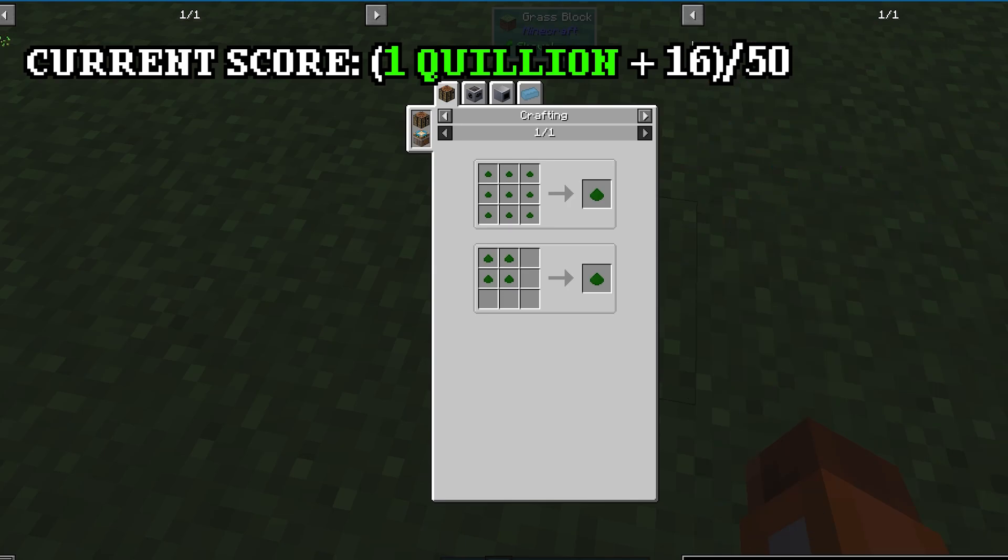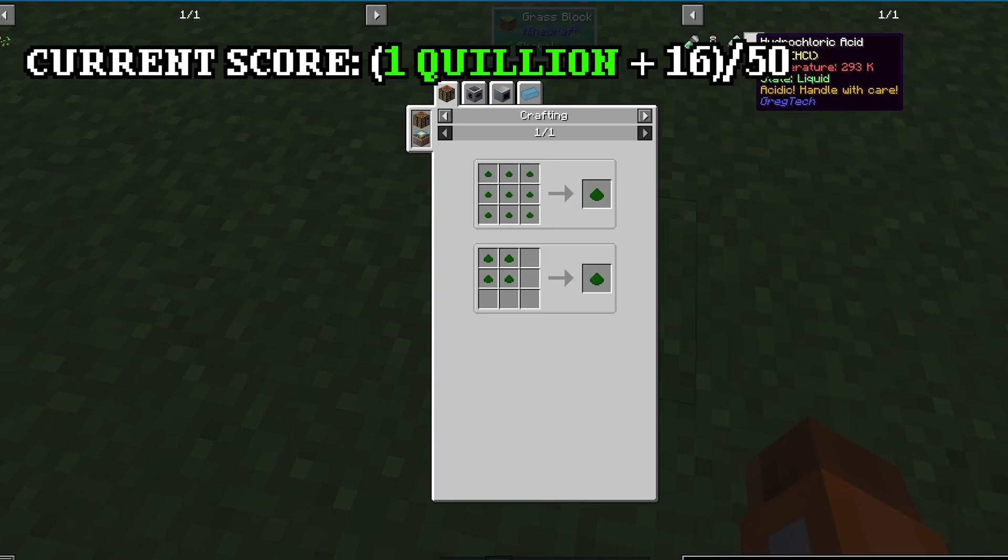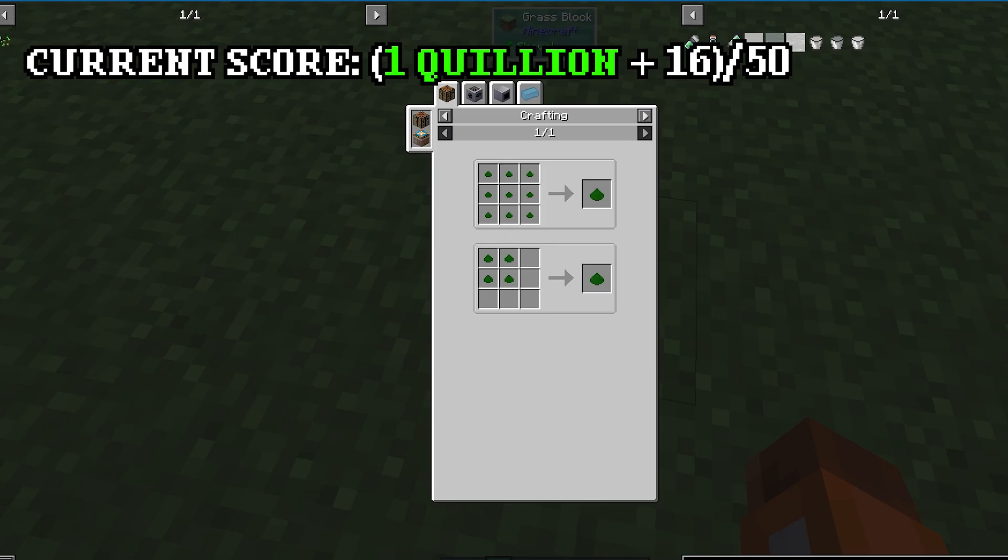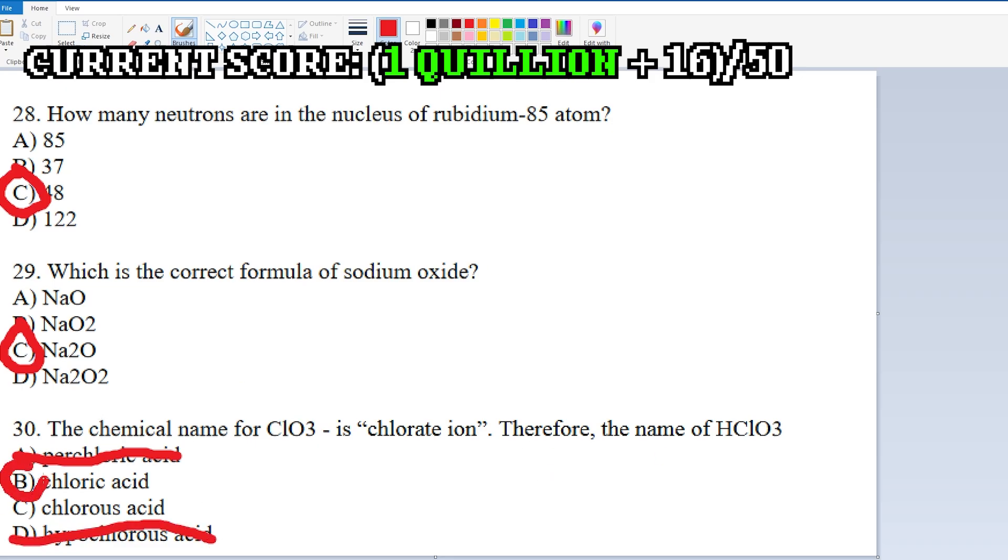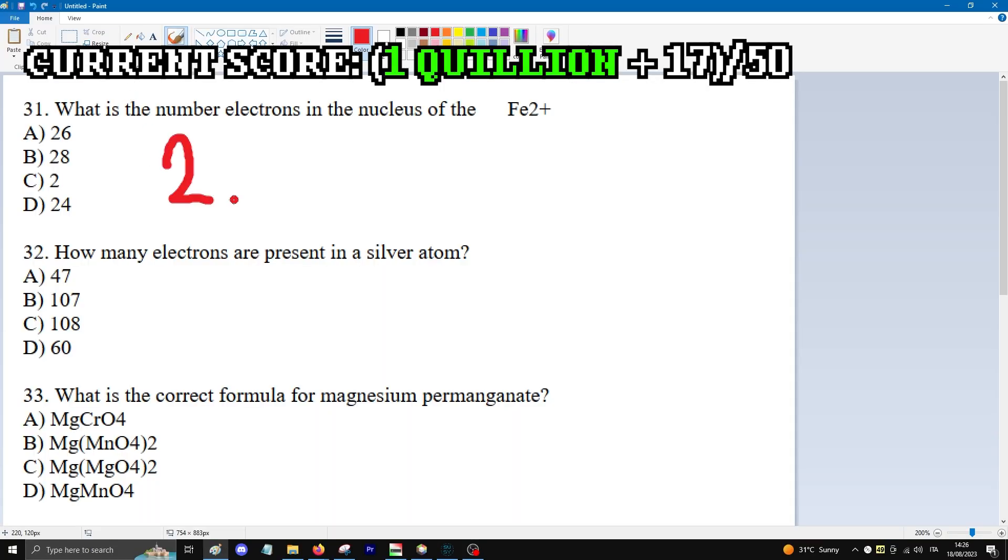Question 30. I am checking the items with GregTech to see if they exist. There is no such thing as chloric acid, so the answer is very obviously B. 26 plus 2 is equal to 28.